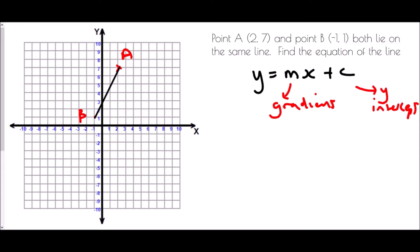By looking at the diagram we can see the intercept is going to be 3, but I don't want to use the diagram just now. I want to show you how we can actually work out the value of c to be certain, because in mine it's a little bit off so it might not be 3.